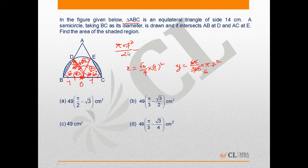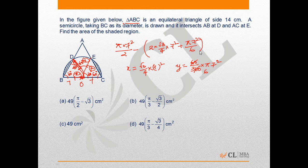So we need to subtract area of the semicircle minus 2 times X, that is √3/4 × 7², plus π × 7²/6. Now solving this we will have π × 7²/3 minus √3/2 × 7².